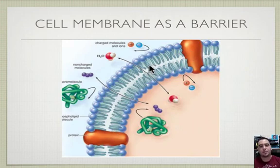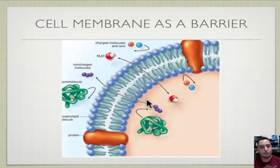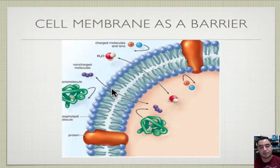The phospholipid bilayer is the barrier — it blocks some things but lets others through. Small molecules like water, carbon dioxide, and oxygen can get in and out; they can wiggle their way through the phospholipids. Small molecules that are uncharged — no charge — can go in and out as they please.